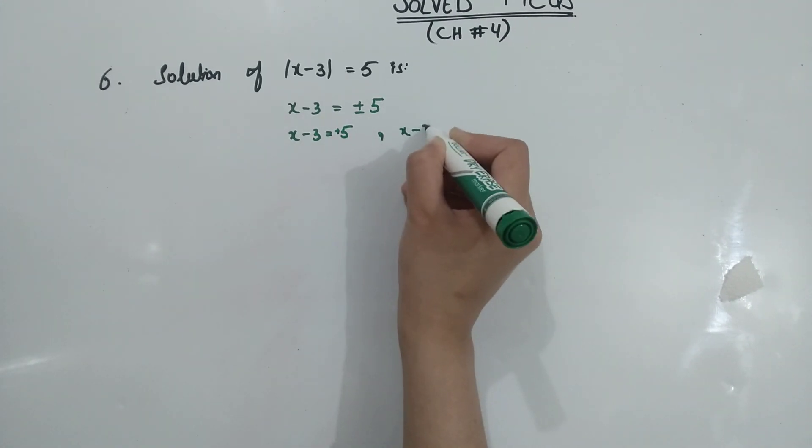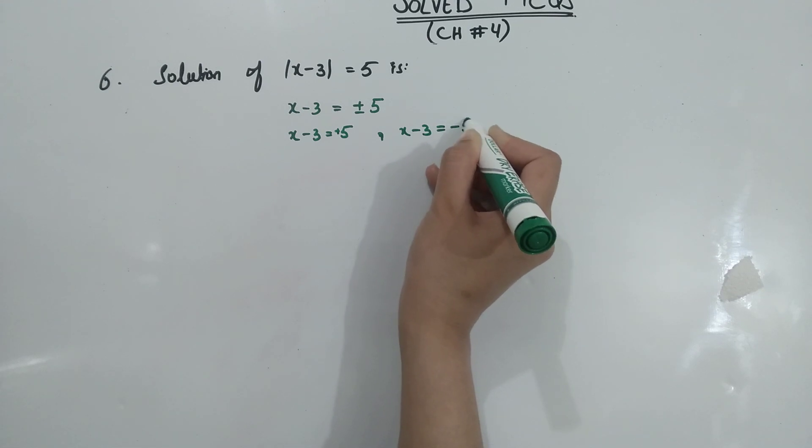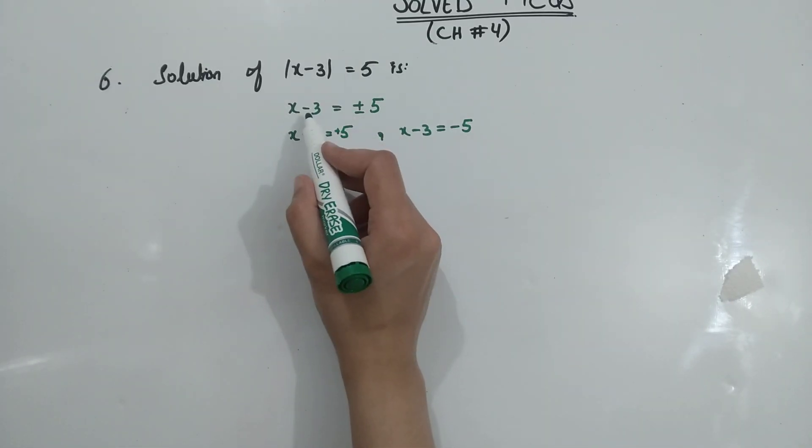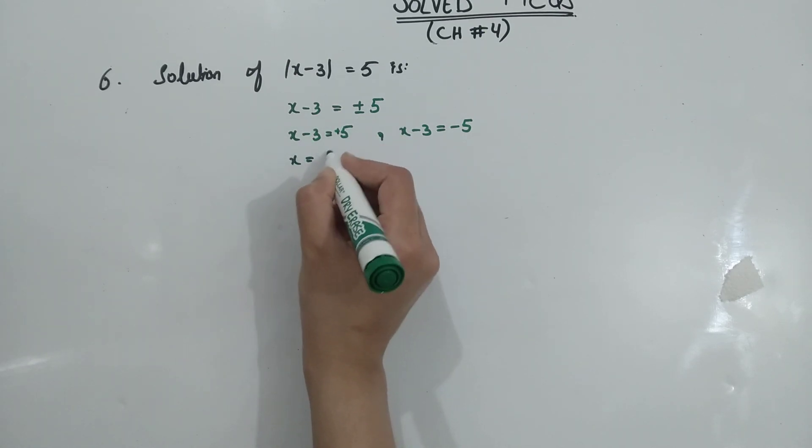So we will write x minus 3 equal to 5, and x minus 3 equal to minus 5. Here we will write 5. Here we will write x equal to 5, and minus 3 will be plus 3, and x equal to 8.